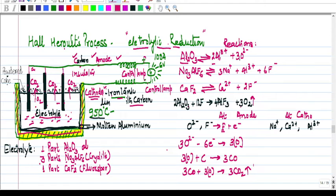As electrolyte, we take one part of alumina. This is the alumina which we purified in Bayer's process. Then we add three parts of cryolite. Cryolite is actually solvent, it works as fused solvent. So we use one part alumina, three parts cryolite, and one part fluorspar.